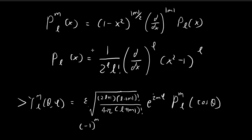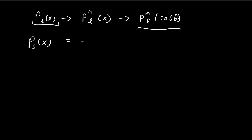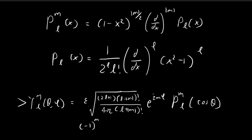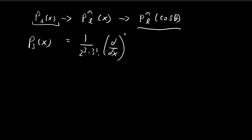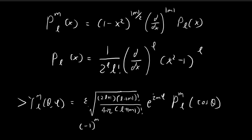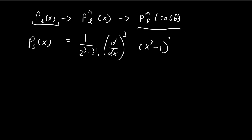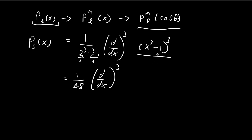P₃(x) equals 1 over 2³ times 3 factorial, with the derivative operator applied 3 times onto (x² − 1)³. The constants give us 8 times 6 equals 48. Expanding (x² − 1)³ gives x⁶ − 3x⁴ + 3x² − 1.